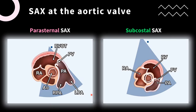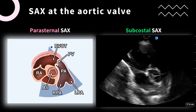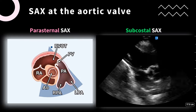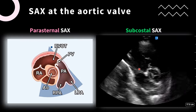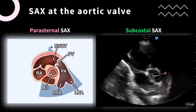If you tilt your transducer to point more at the base of the heart, you'll now see the aortic valve view of the short axis. In the parasternal short axis at the aortic valve level, you'll see your right atrium, right ventricle, RVOT, and pulmonary artery. In the subcostal view, you'll still have your right atrium, right ventricle, and pulmonary artery. This is where we focus next, because blood flow going through here can be measured — this is what we call the RVOT VTI. You can see the aortic valve in the center, right atrium, right ventricle, pulmonic valve, and pulmonary artery.